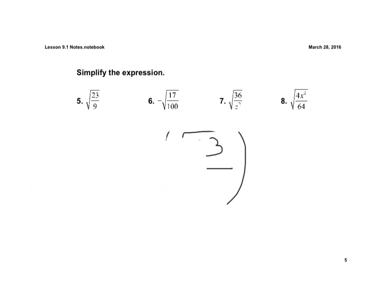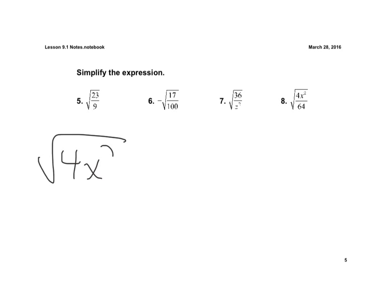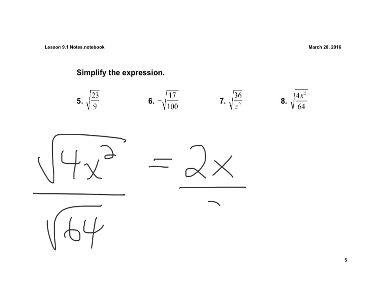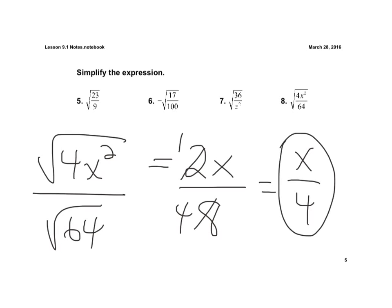Now we're going to look at one with variables — number 8. I'm going to break that up into the square root of 4x squared over the square root of 64. Since there's a perfect square underneath the radical, I don't need to use the factor tree. The square root of 4x squared is just 2x, and the square root of 64 is 8. Then I can reduce because 2 and 4 can reduce, so this becomes x over 4. That's the final answer.